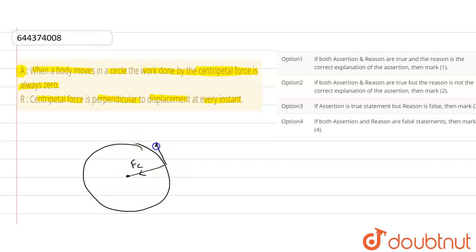the displacement will be like this. So students, what is the value of work done? Work done is equal to F dot ds, so we can say that it is